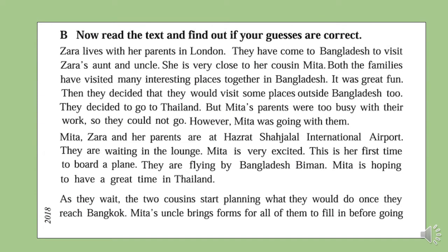Let's start reading the text. Zara lives with her parents in London. They have come to Bangladesh to visit Zara's aunt and uncle. She is very close to her cousin Mita. Both the families have visited many interesting places together in Bangladesh. It was great fun. Then they decided that they would visit some places outside Bangladesh too. They decided to go to Thailand, but Mita's parents were too busy with their work, so they could not go.